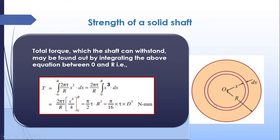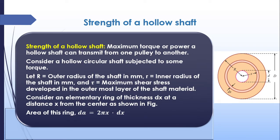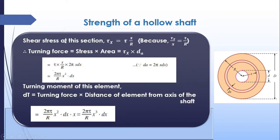This was for a solid shaft — one with no holes. Now moving on to a hollow shaft: its strength is the maximum torque it can withstand. We use the same procedure. A hollow circle has inner radius r (diameter d) and outer radius R (diameter D). We consider a small ring of thickness dx at distance x from the center. The area of the ring is 2·pi·x·dx.